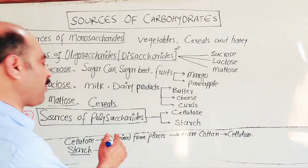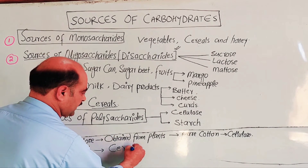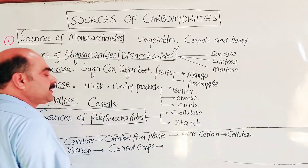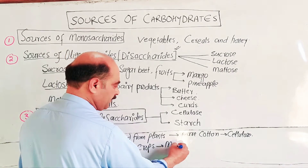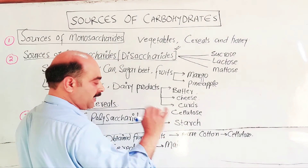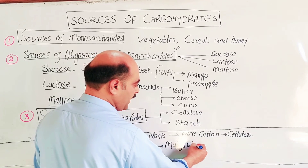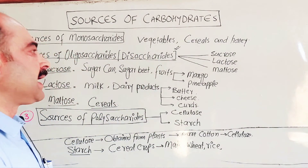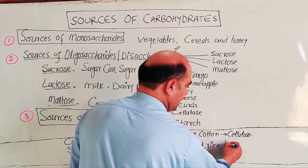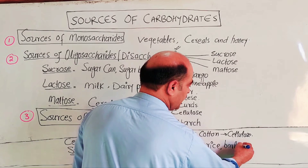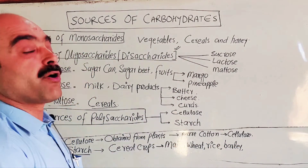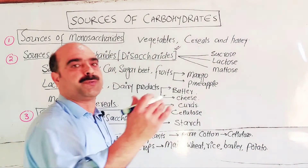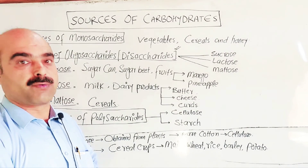The main source of starch is cereal crops. These include maize, wheat (gandom), rice (chawal), and barley (jow). Potato is also a major source of starch — in fact, potato and sweet potato are among the most starch-rich sources.